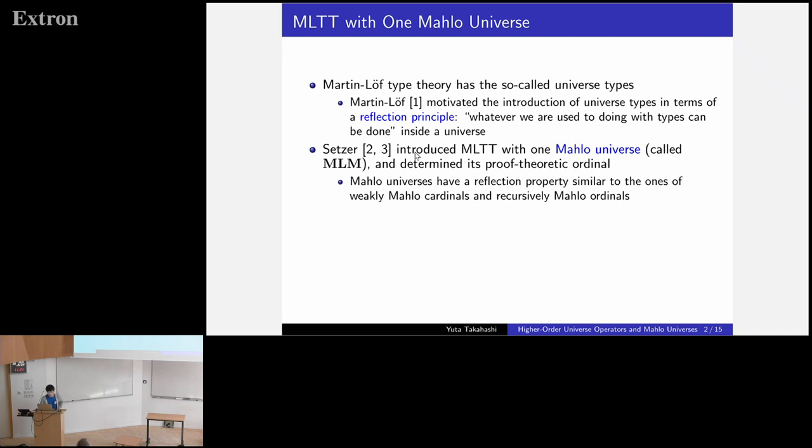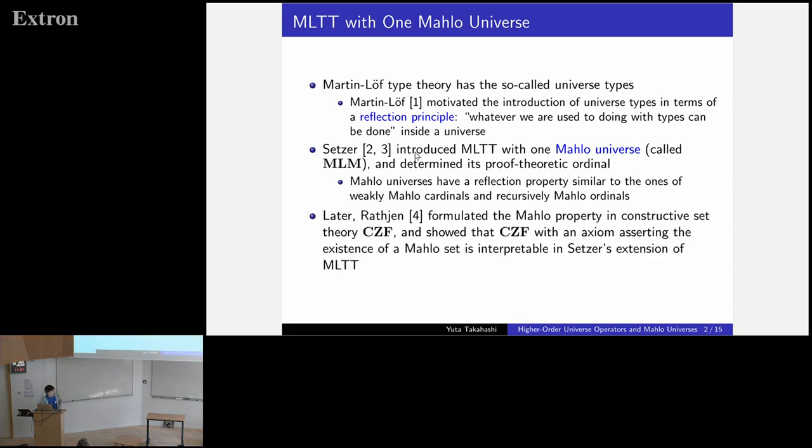Mahlo universes have a reflection property similar to the ones of weakly Mahlo cardinals and recursively Mahlo ordinals. Later, Rathjen formulated the Mahlo property in constructive set theory CZF and showed that CZF with an axiom asserting the existence of a Mahlo set is interpretable in Zeta's extension of MLTT.